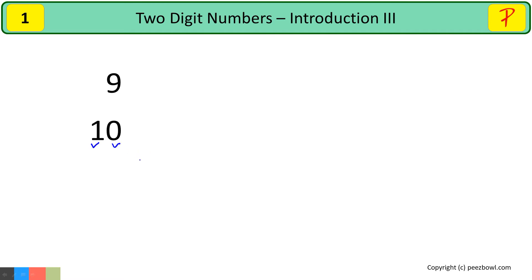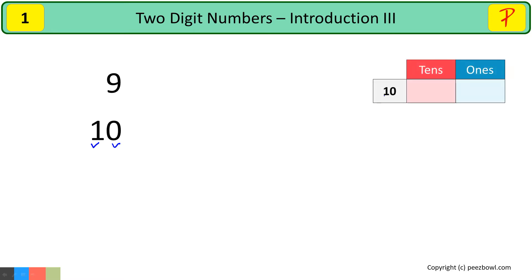Let us see the place values of 0 and 1. In number 10, we have 0 at the ones place and we have 1 at the tens place. So, in number 10, the place value of 0 is ones and the place value of 1 is tens.